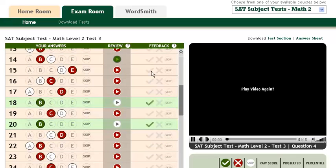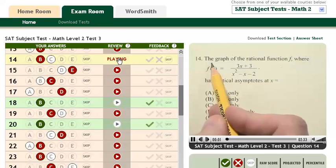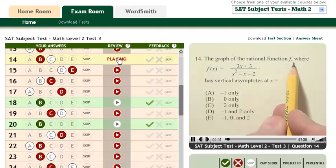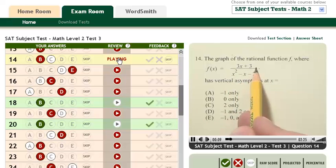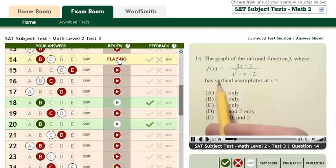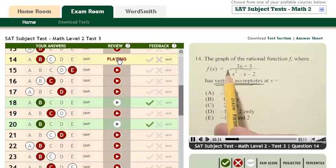The graph of the rational function f, where f(x) equals 3x plus 3 divided by x squared minus x minus 2, has vertical asymptotes at x equals, and here are your choices. When you look for vertical asymptotes, you want to focus on what x values make the denominator 0. Those are going to be points that are undefined, right? They're not in the domain of the function.